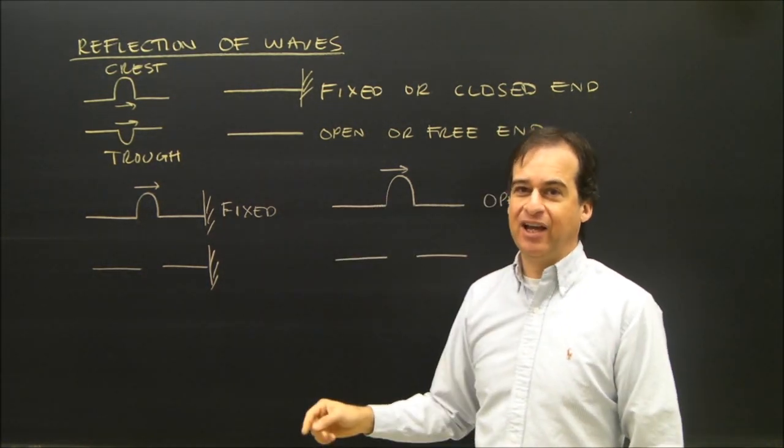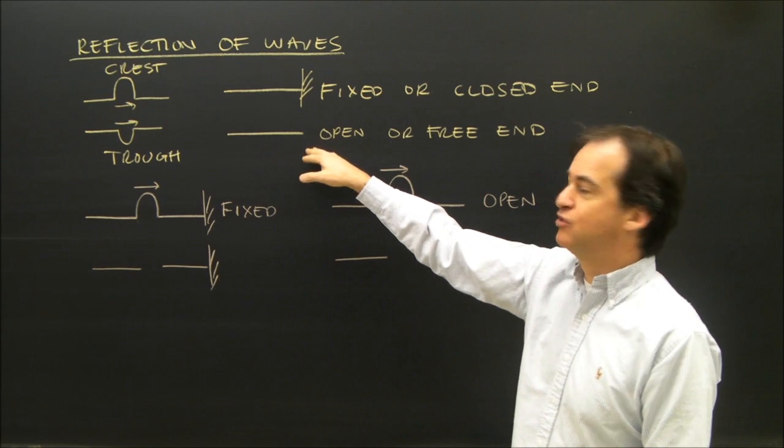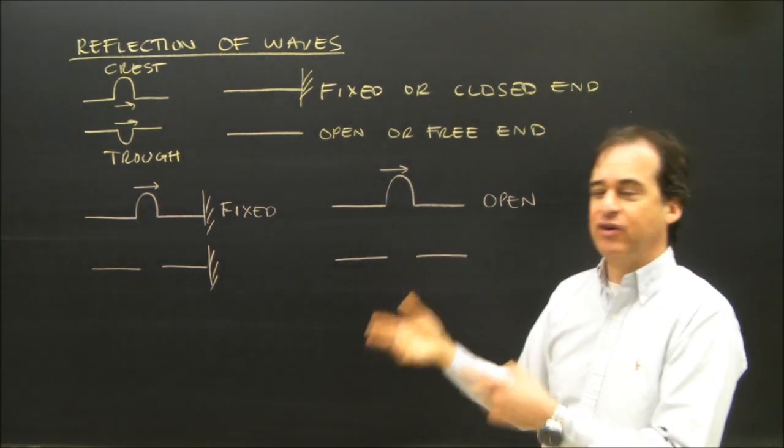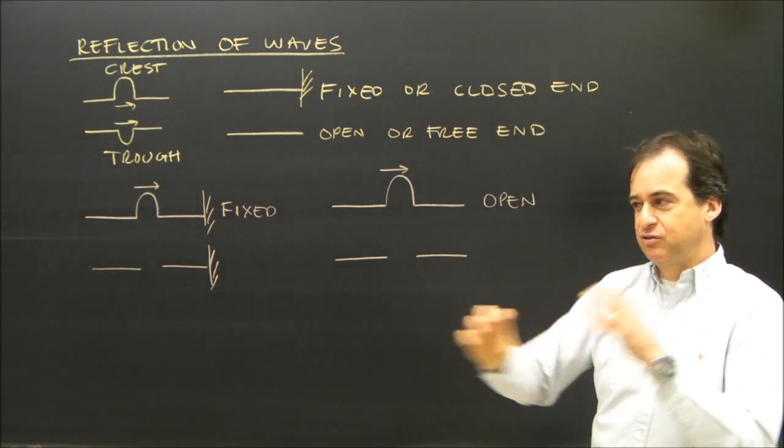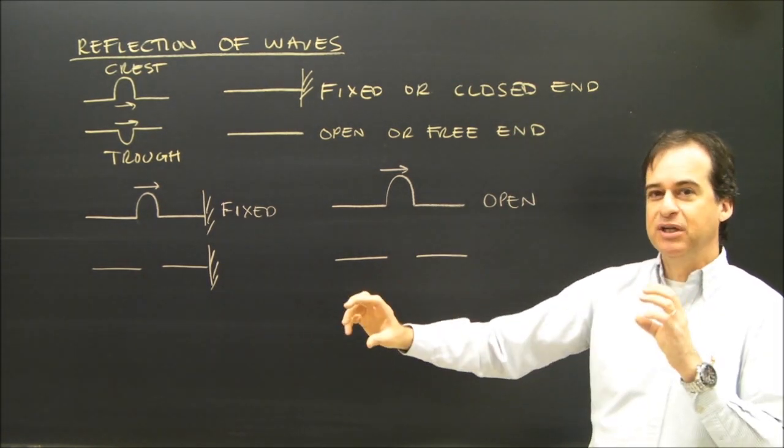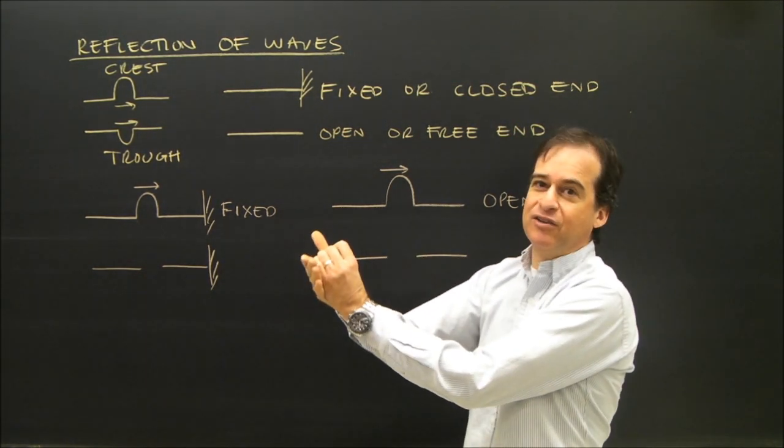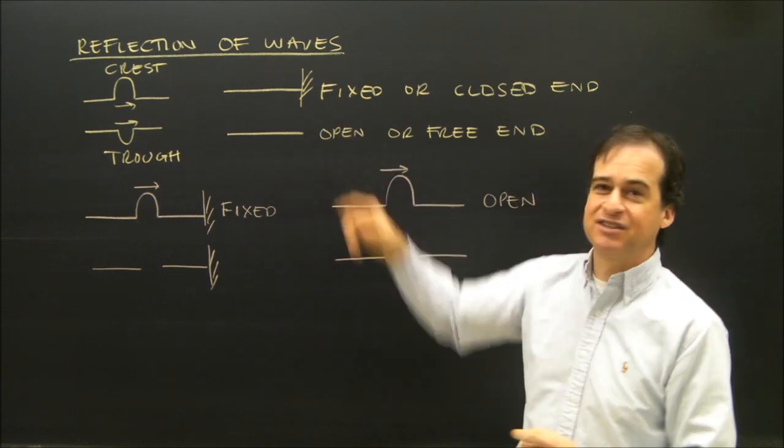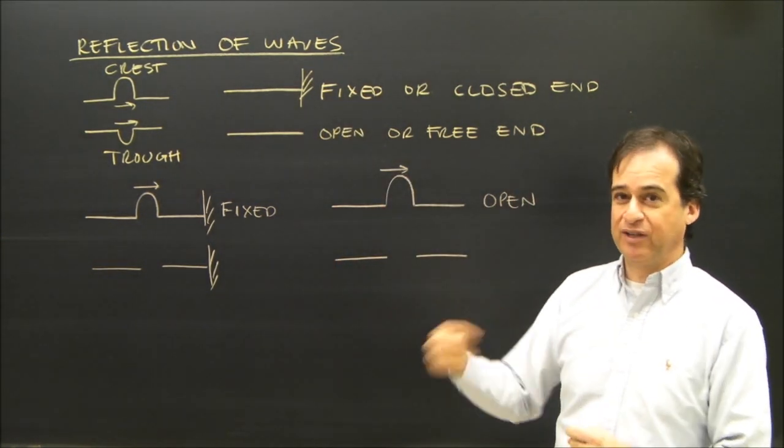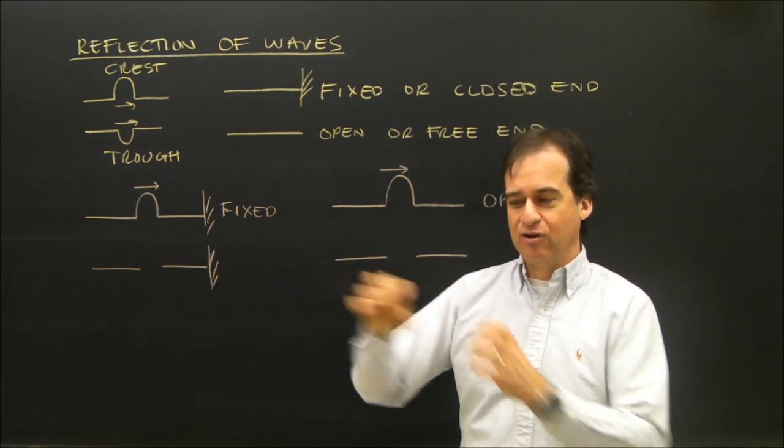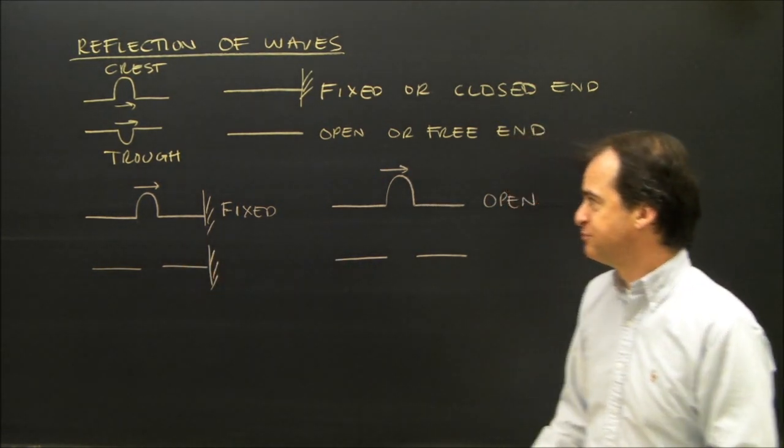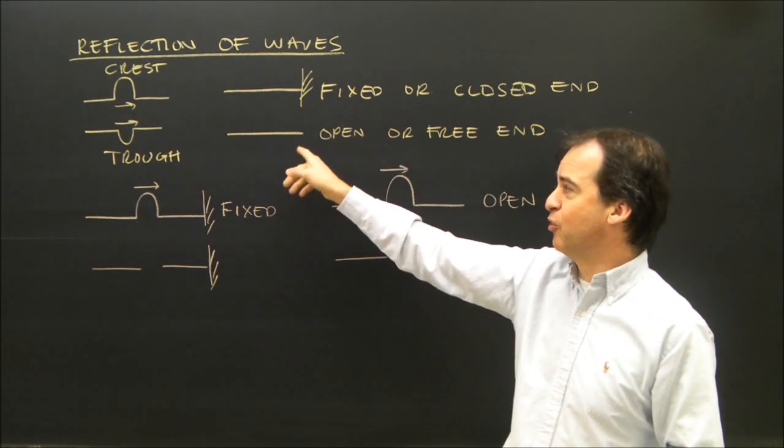An open end or free end is when the wave travels to something where it's free to move. For example, a sound wave traveling through a column of air in a tube. When it gets to the other end, if the tube is capped, that's a fixed end. The wave can't get out, it reflects back in. But an open end, the wave is free to travel into the air from the inside of the tube. So we have a fixed end or an open end.